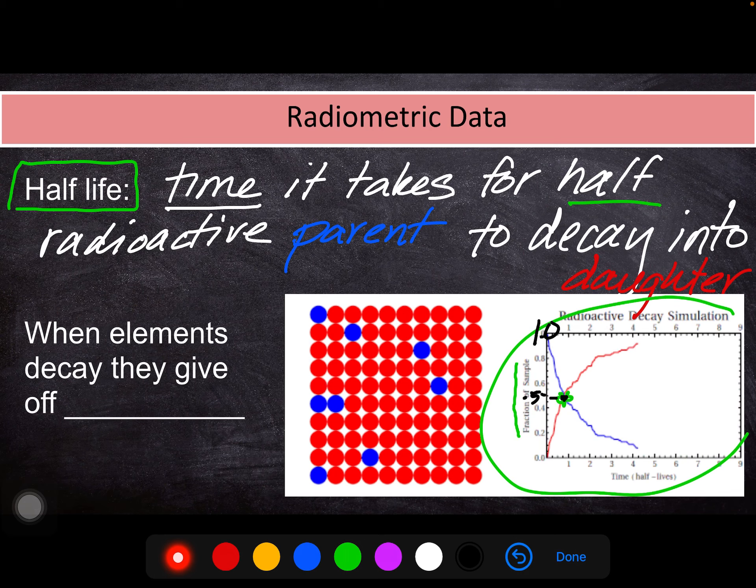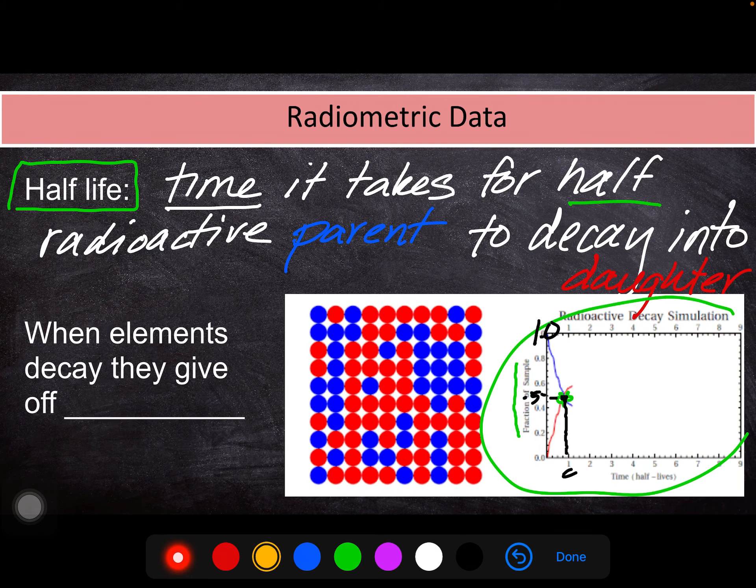When the parent reaches half of its material, the time it takes is one half-life. And so that time can be used to figure out how old the rock is.